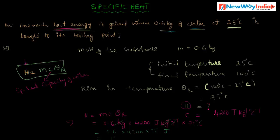Multiplying these values, we get 1,89,000 joules. The unit is joules, so we get the value of heat energy H in joules. In this way, you can find the required variable by using this formula.